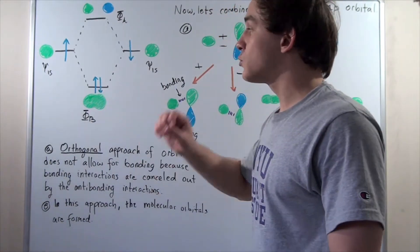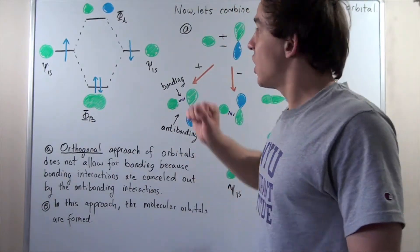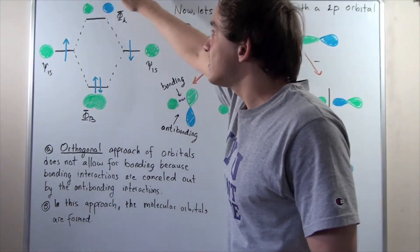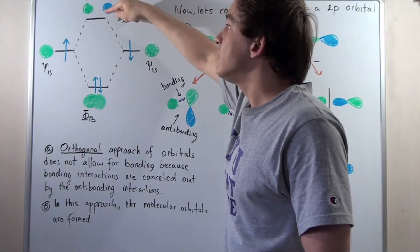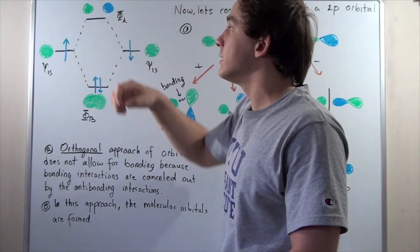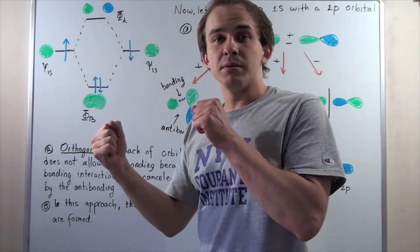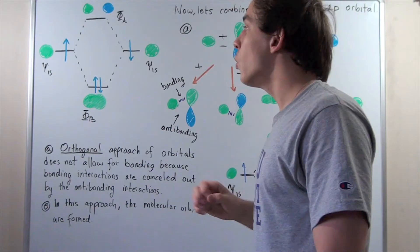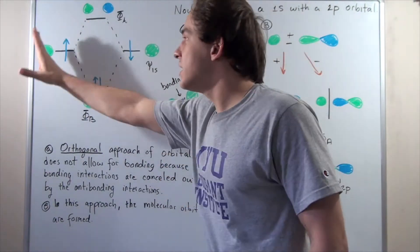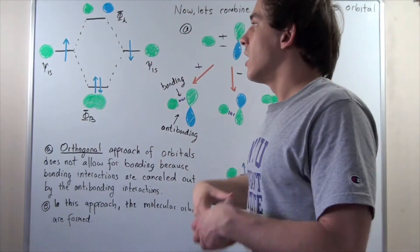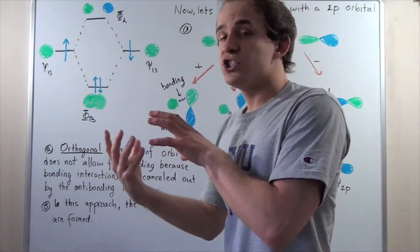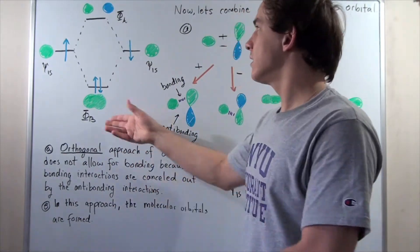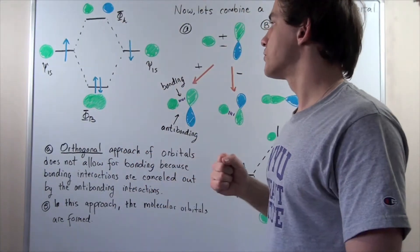These electrons will not want to go into the anti-bonding orbital because it is higher in energy and causes the bond to destabilize or break apart. So, once again, this was combining two atomic 1s orbitals to form two molecular orbitals.